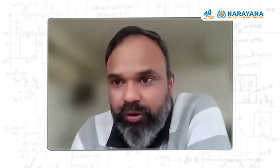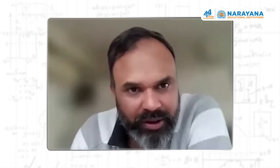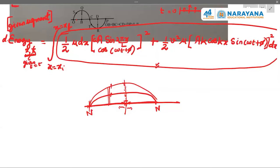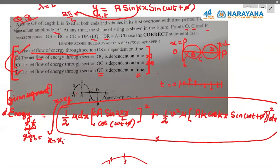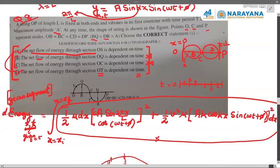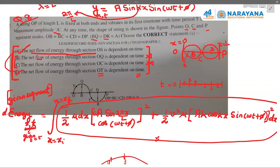Reviewing the options: net flow of energy through section OS is dependent on time — yes. Through OQ (node to antinode) — not changing, constant. Through OC (node to node) — also constant. Through OT — this section includes part beyond C, so CT changes with time, making OT time-dependent. Therefore, the correct options correspond to sections where energy flow is time-varying.